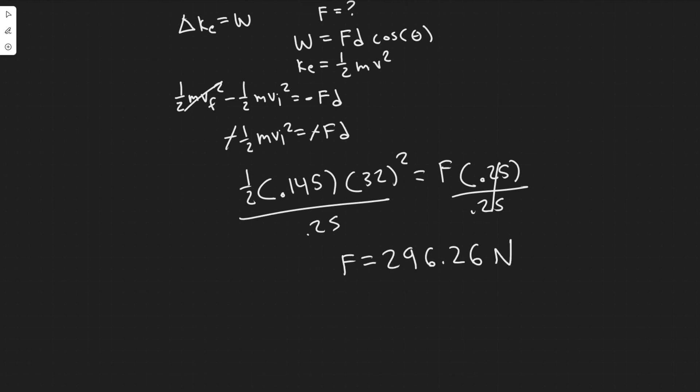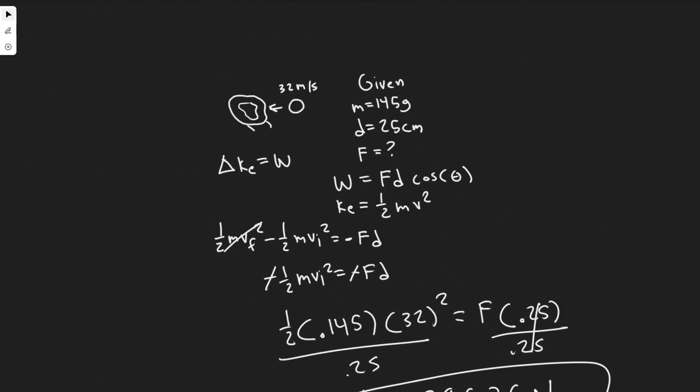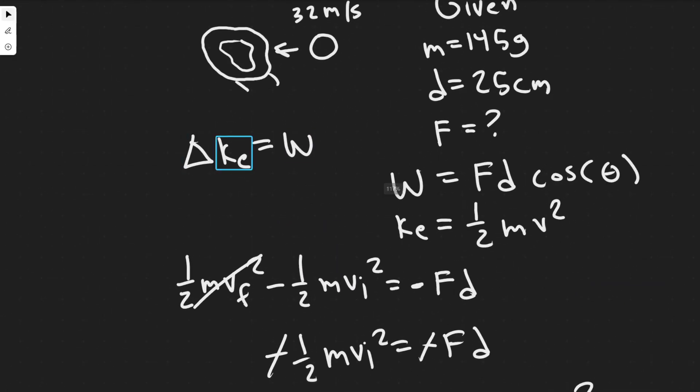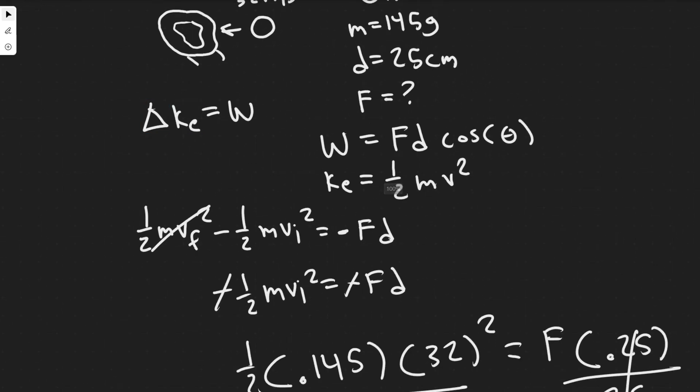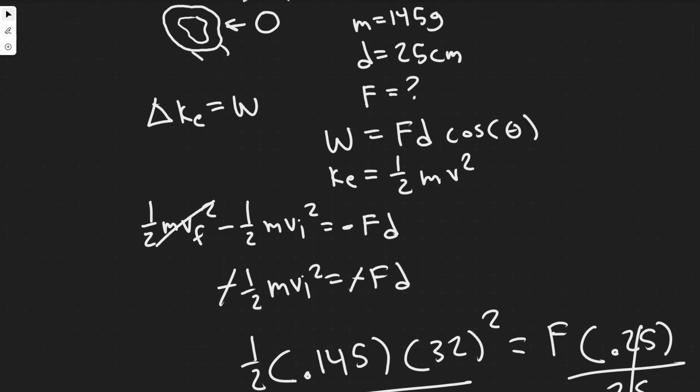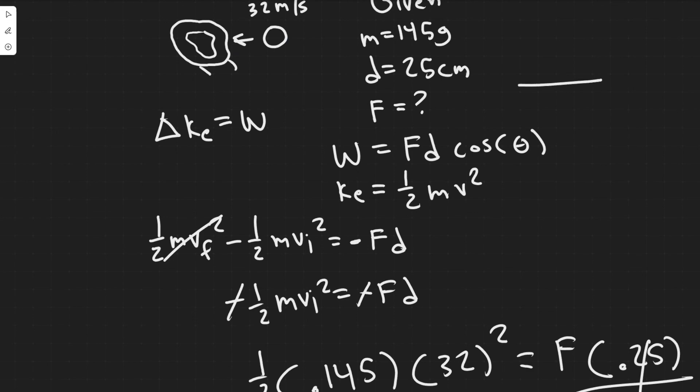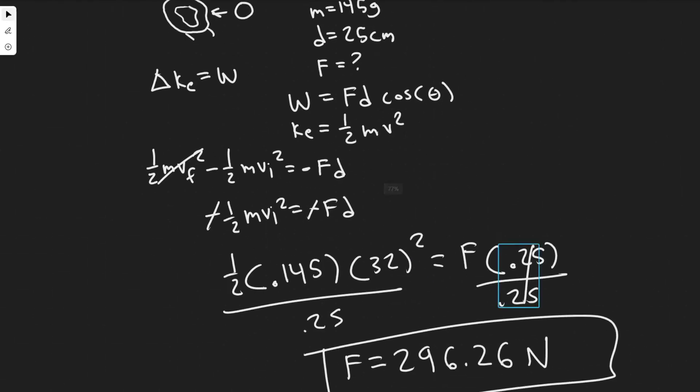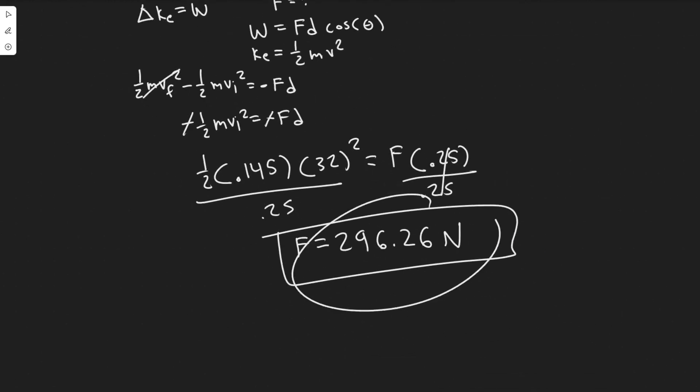And then force we measure in newtons. And so you can round however you want, you can say 296 or whatever you want to do. But essentially, this is going to be your answer. So just keep in mind, the main takeaways from this are the work energy theorem, which tells us the change in the kinetic energy equals the work. And then noticing that this value is going to be negative because of the opposite directions of the way it travels and the force being applied. So those are the main takeaways. And so this right here is going to be your answer. And hopefully you found this helpful.